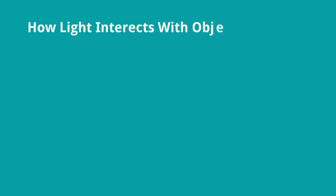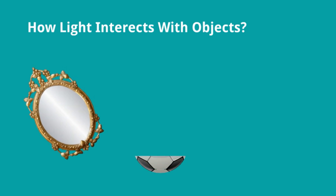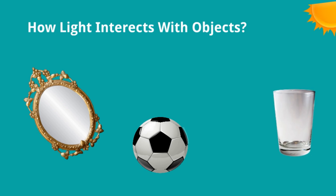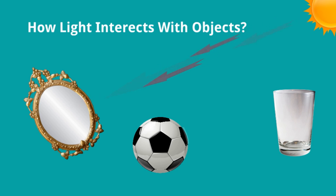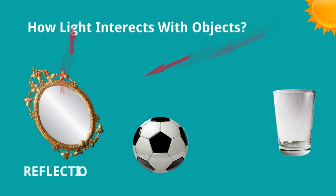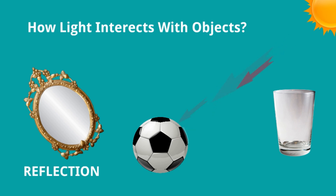How does light interact with objects? Let us consider some objects like a mirror, a football, or glass. Light comes from the source and interacts differently with different materials. Light coming from the source falls on the mirror and it is reflected — so this is reflection.